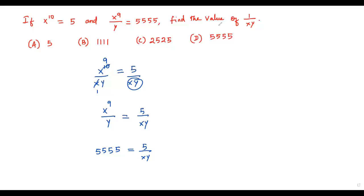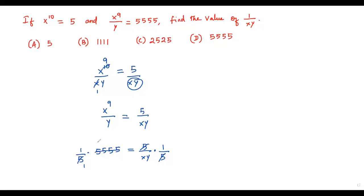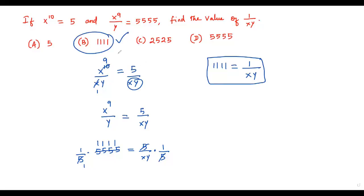Now we need 1 over xy, but the right side has 5 over xy. So we multiply both sides by 1/5. The 5 cancels, and 5555 divided by 5 equals 1111. Therefore 1 over xy equals 1111, so option B is correct.